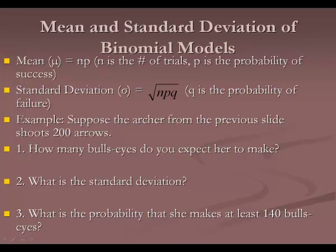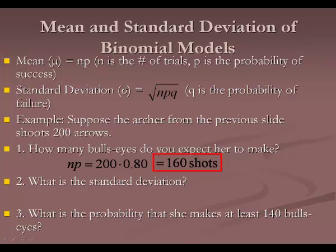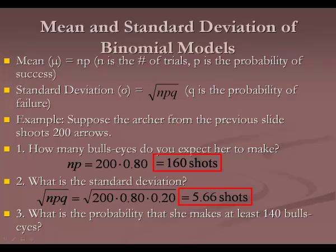The mean and standard deviation for a binomial model: the mean is N times P, where N is the number of trials and P is the probability of success. Standard deviation is the square root of N times P times Q, where Q is the probability of failure (the opposite of P). For the archer shooting 200 arrows at 80%: expected bullseyes = 200 × 0.8 = 160. Standard deviation = √(200 × 0.8 × 0.2) = 5.66 shots.